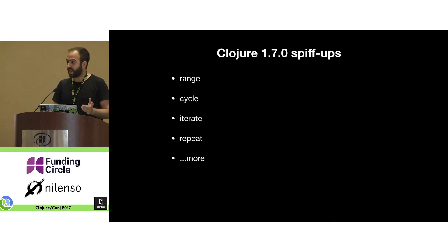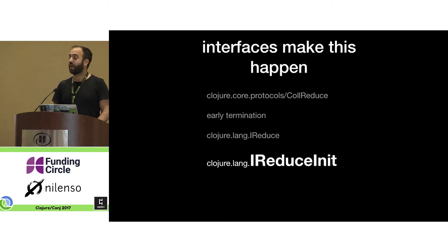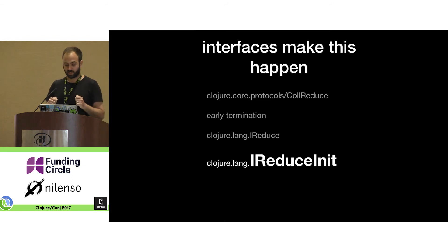Clojure 1.7 already has a lot of these improvements for specific functions like range, cycle, iterate, and repeat, plus a few others. I want to show you how to make this happen for your own collection.